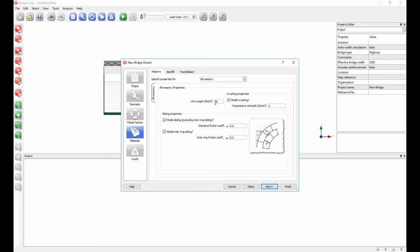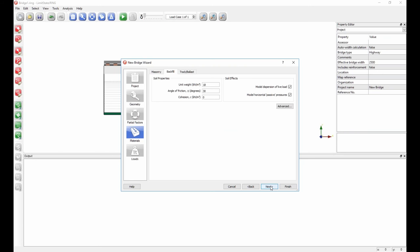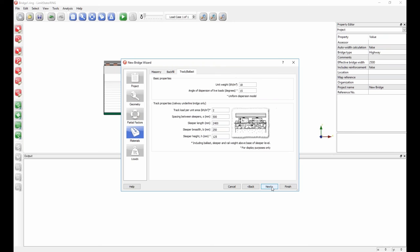Move on to the masonry. Various things are possible. We can specify different values for piers and spans if we had a multi-span structure. For now, however, I'm just going to keep things simple and use the default values for the unit weight, and for the compressive strength, and also for the coefficient of friction. So limit state ring allows a wide variety of different failure modes to be modeled, including both hinging, sliding, and combined failure mechanism, which is why it's asking for a friction coefficient. Move on to backfill. Enter details of the unit weight, angle of friction, and cohesion. And also just confirm that we're modeling the various effects of the backfill that we would expect to be present, so that's dispersion of the live load through the fill, and modeling passive restraint. So I'll keep those.